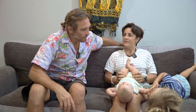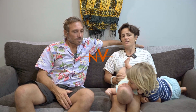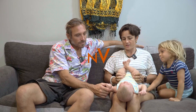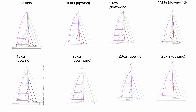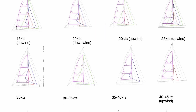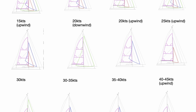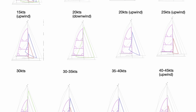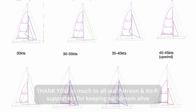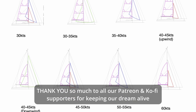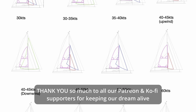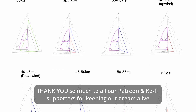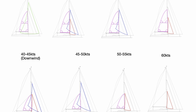Today's video is about our ideal sail plan. This plan is designed to give us a large range of sail configurations to match all the different wind conditions. Our full sail plan consists of 16 different configurations for varying wind conditions, ranging from 5 to 60-plus knots, making use of our three forestays and three reefs on the mainsail.